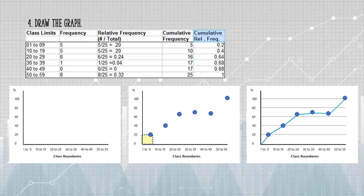The final step is to connect the dots with straight lines. The ogive is one continuous line, made up of several smaller lines that connect pairs of dots. And here's my finished graph.